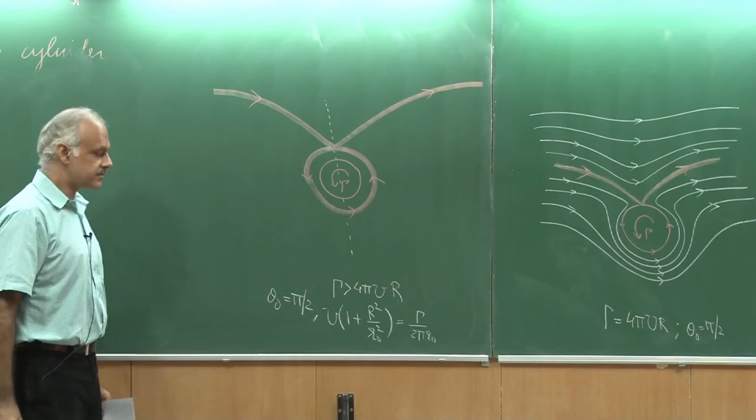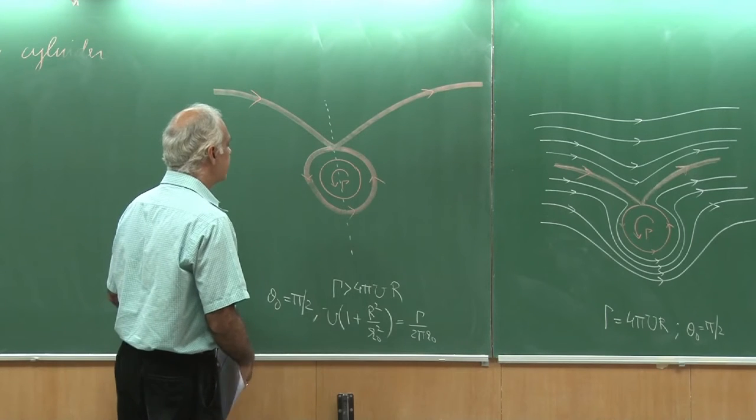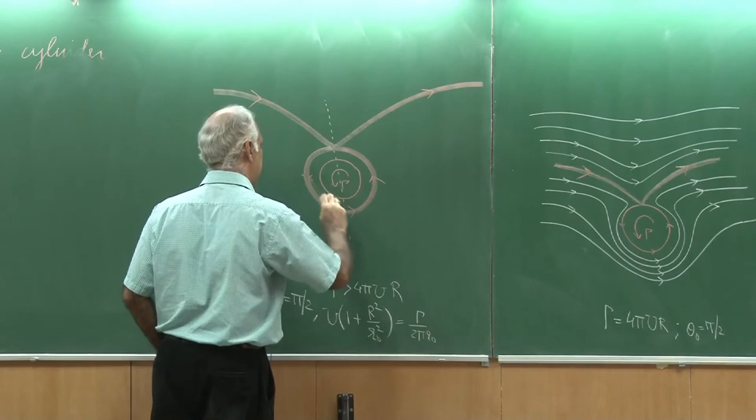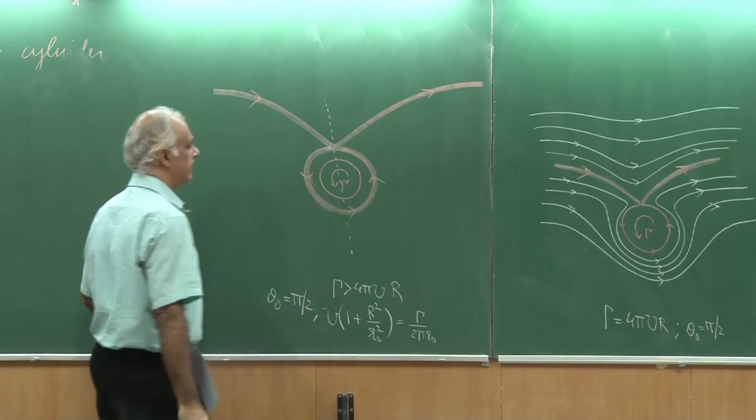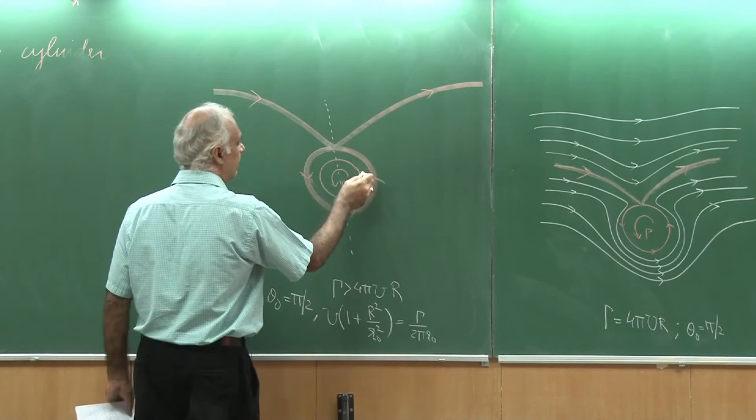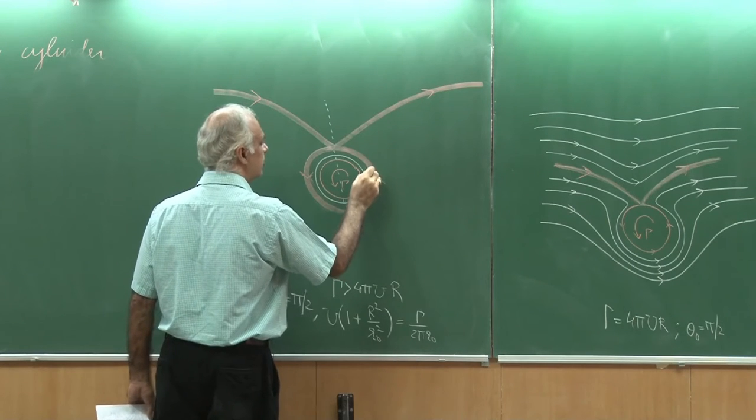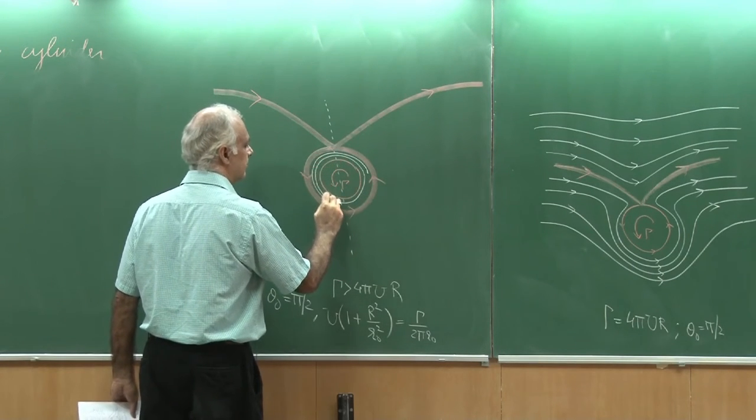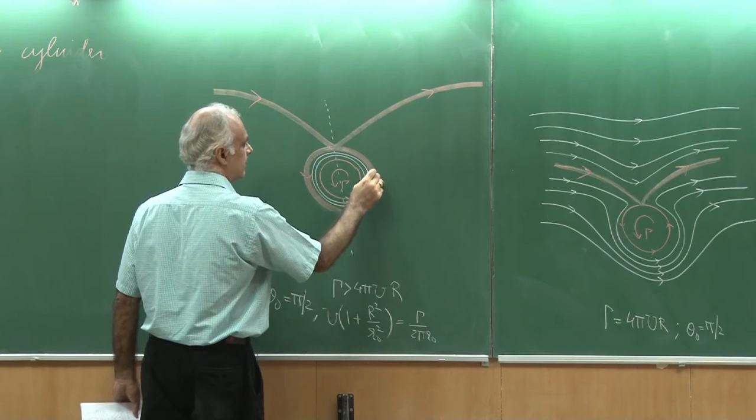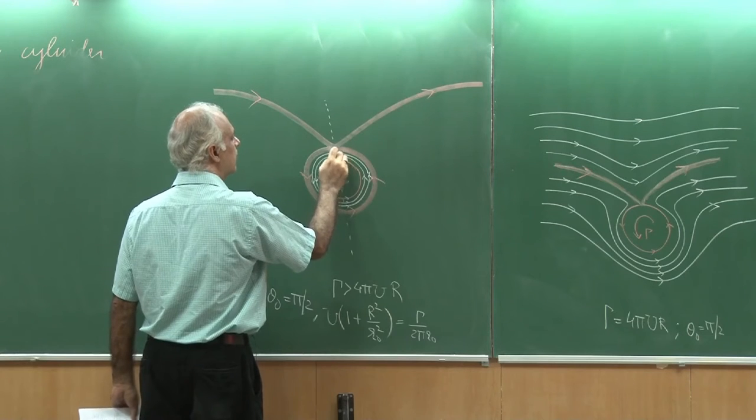This would be the complete stagnation streamline, this equation over here. And if I draw the other streamlines, they look rather interesting. In fact, I would have these streamlines here, which would just go around the cylinder. These are closed streamlines. And the direction is as shown here. They are all going in a counter clockwise manner.